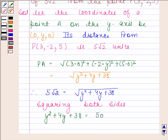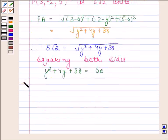Now this implies y² + 4y - 12 is equal to 0.